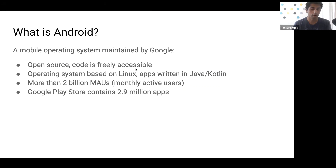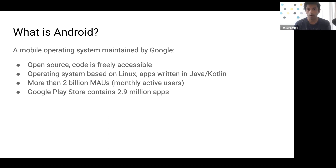So I want to talk about what we're here for, which is Android. What is Android? Android is a mobile operating system maintained by Google. The cool thing about Android, as opposed to a platform like iOS, is that it's open source, which means the code is freely accessible. You could look at all the source code and actually fork it — clone the Android OS source code, modify it, and make whatever you want with it. That's one of the really powerful things about Android: it's extensible.